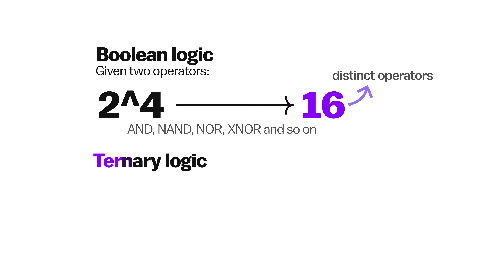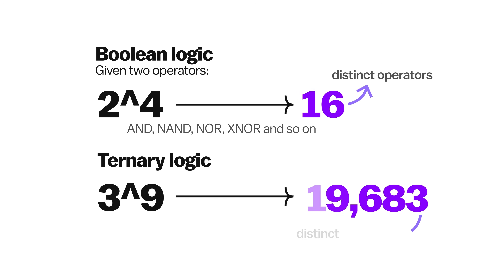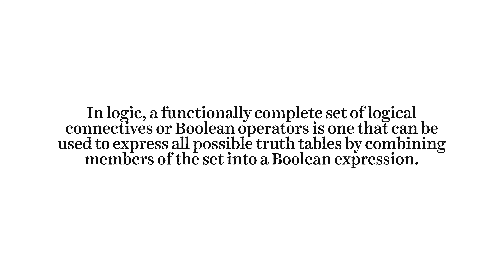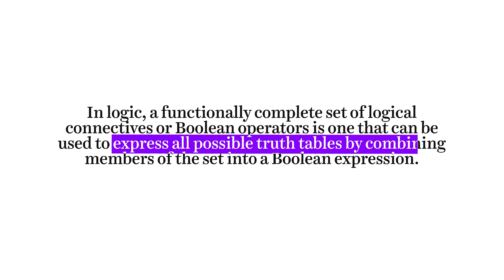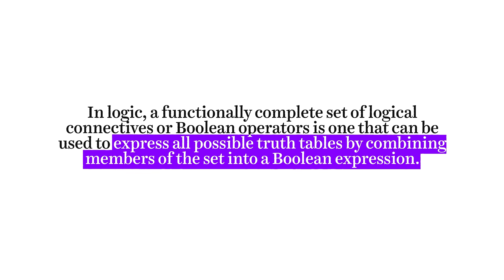Ternary logic has 3 to the power of 9, so 19,683 distinct operators. This makes it quite complex, but in reality, just like in binary logic, only the subset of functionally complete operators are used in practice.